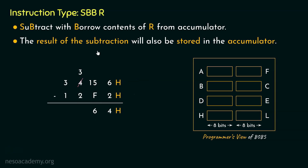Getting back to our actual problem: since we borrowed 1 from this place, it became 3. From 3 if we subtract 2, we have the result as 1. Finally, 3 minus 1 gives us 2. So the result of the subtraction 3456 minus 12F2 is 2164.